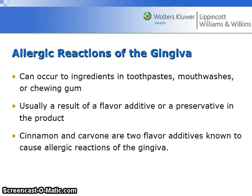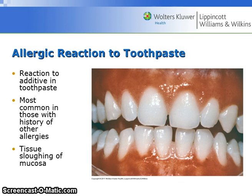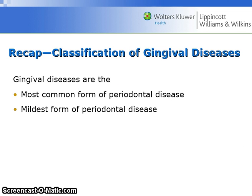Allergic reactions of the gingiva can occur due to ingredients in toothpaste, mouthwash, or chewing gum — usually a result of a flavor additive or preservative in the product. Cinnamon and carvone are two flavor additives known to cause allergic reactions of the gingiva. Allergic reactions to toothpaste are most common in those with a history of other allergies, and you will see tissue sloughing of the mucosa.